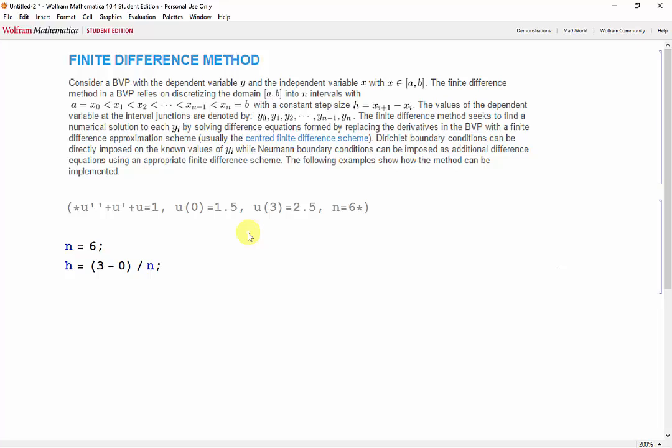Now we need to construct the vector containing our values of x which range from 0 to 3 depending on our step size. We can use the table function to do this. Then we can create our table of the dependent variable u using the symbol function we learned previously. We'll use the symbol function with u joined with the strings of i, and i will go from 0 to n. We'll output the table just so we can see what it looks like.